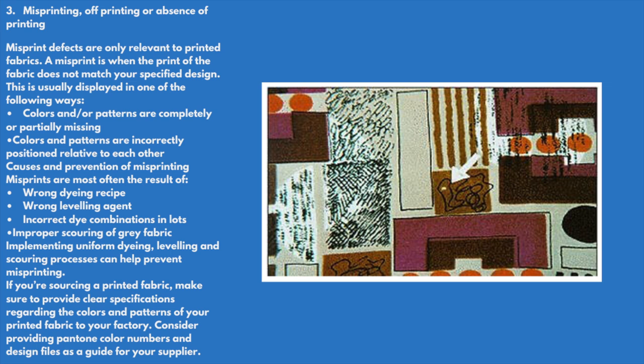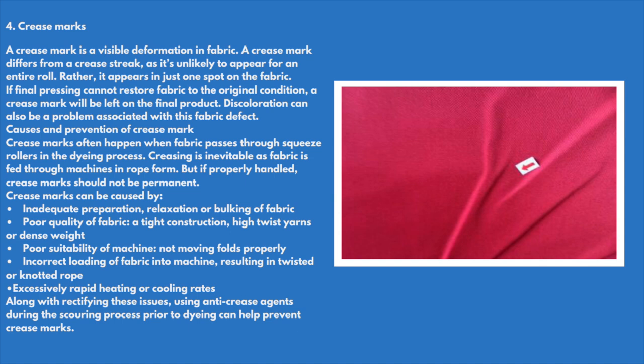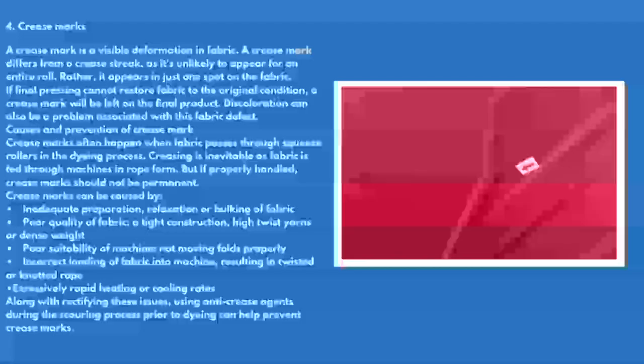Causes and prevention of miss printing: miss printing is most often the result of a wrong dyeing recipe, wrong leveling agent, incorrect dye combination in lots, or improper scouring of gray fabric. Implementing uniform dyeing, leveling, and scouring processes can help prevent miss printing. If you're sourcing printed fabric, make sure to provide clear specifications regarding the color and pattern to your factory, and consider providing Pantone color numbers and fabric files as a guide for your supplier.